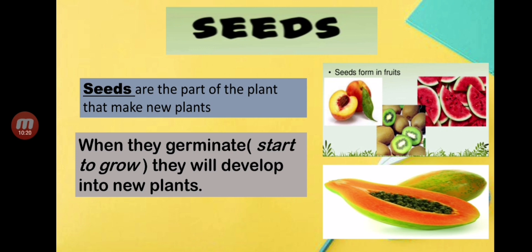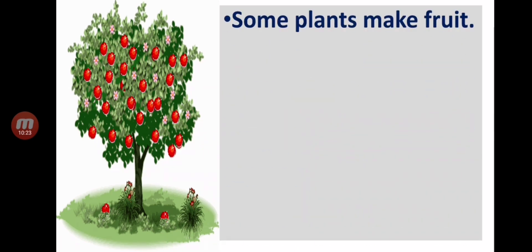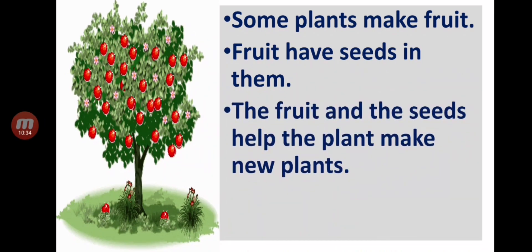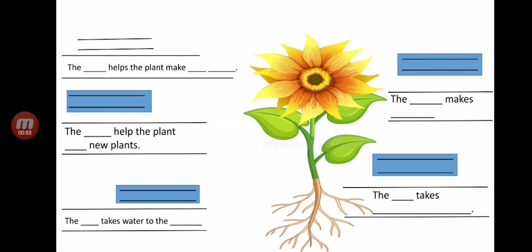Some plants make fruits. Fruits have seeds in them. The fruit and the seeds help the plant to make new plants. So the fruit and seeds of the plant both help the plant to make new plants.